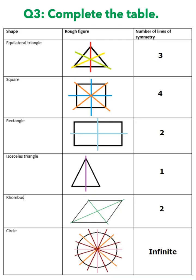Next is question number three, which was to complete the table. All the figures are drawn here — equilateral triangle, square, rectangle, isosceles triangle, rhombus, and a circle. If you are confused about what a rhombus is, you can watch our video on kinds of quadrilaterals on the channel. An equilateral triangle has three lines of symmetry. A square has four lines of symmetry. A rectangle has two lines of symmetry. An isosceles triangle has one line of symmetry. A rhombus has two lines of symmetry. And a circle has infinite lines of symmetry. This is a very important question — you should know how many lines of symmetry are in these figures and how to draw them. Practice on your own as well.